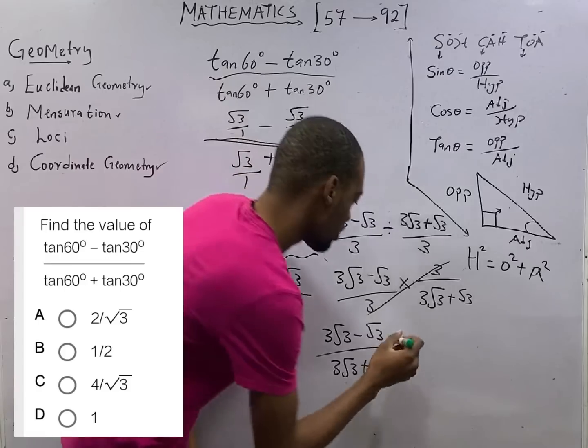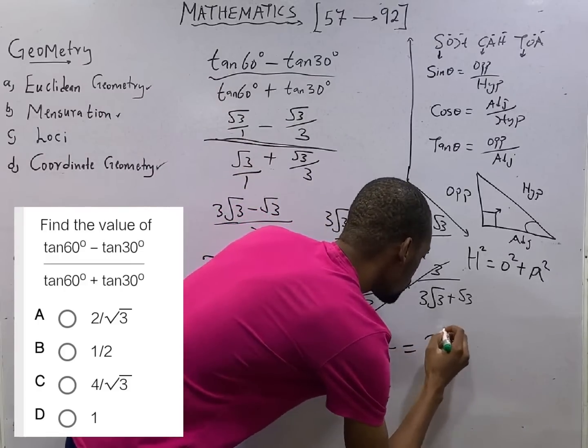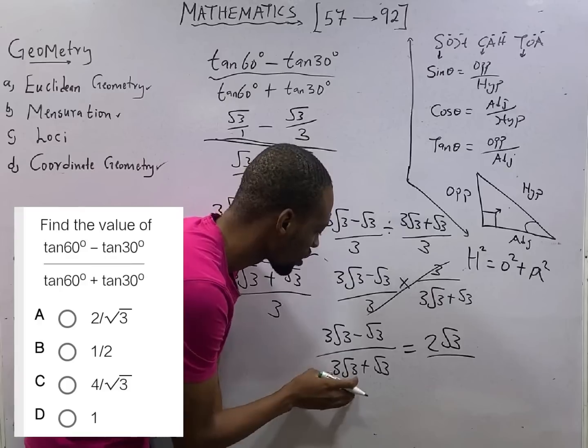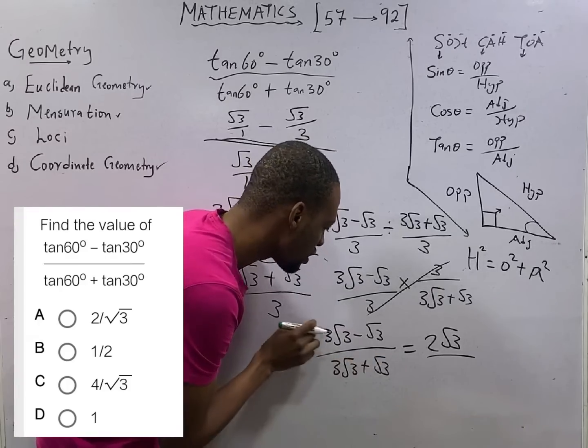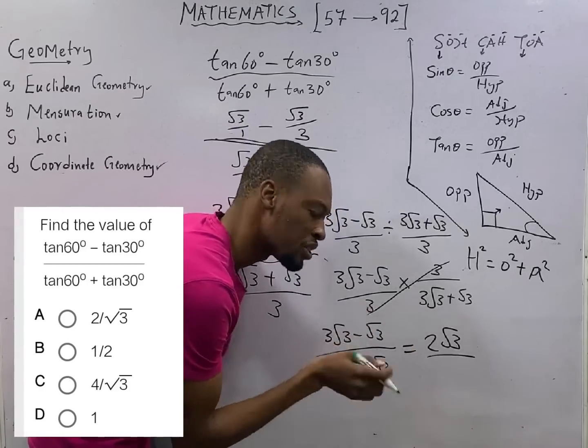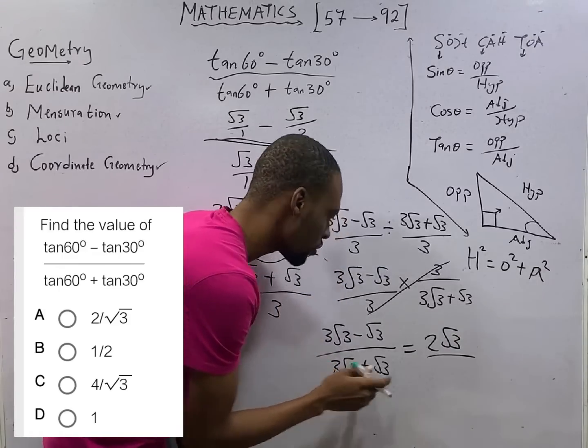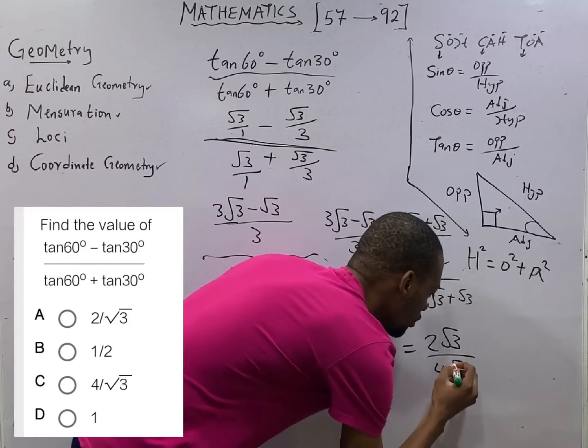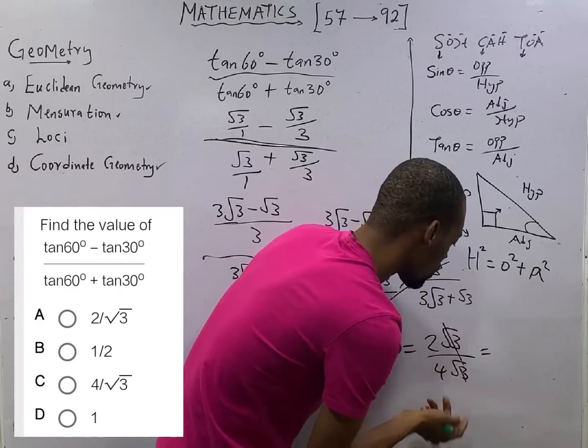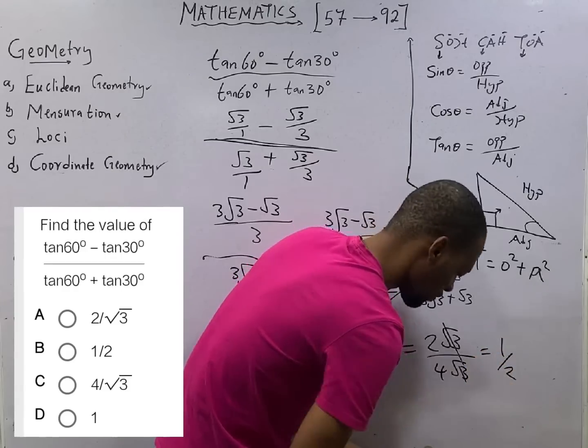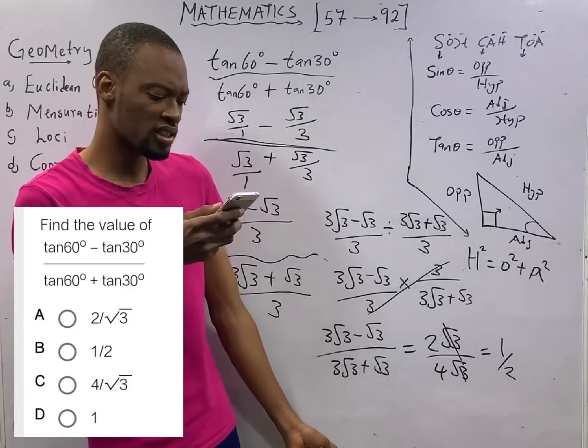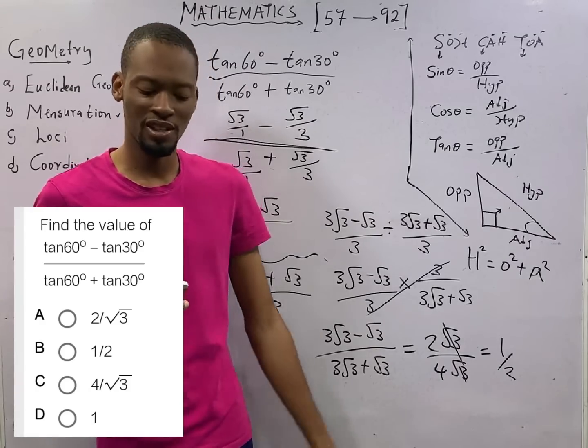This is the same thing as 3 root 3 minus root 3. That will give you 2 root 3. That is subtraction of surds, since they are the same root. 3 root 3 plus root 3, that is 4 root 3. 3 divided by root 3 is 1. 2 divided by 4. That is 1 over 2. So, ladies and gentlemen, this is 1 over 2. And option B is the correct option.